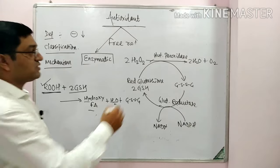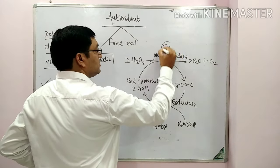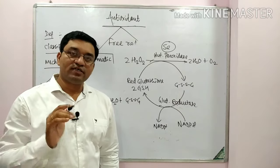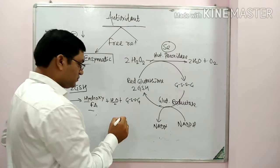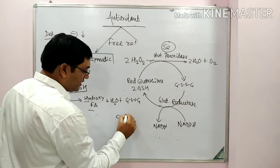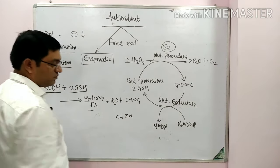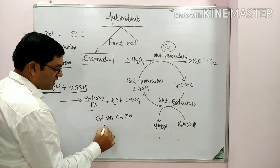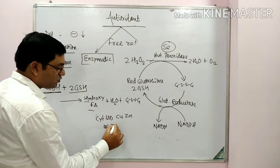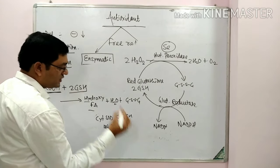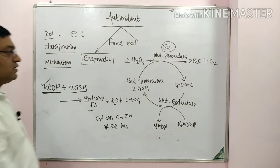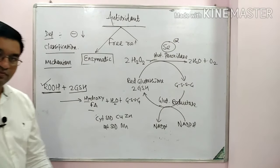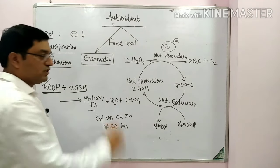Glutathione peroxidase is selenium-dependent — these are important MCQ facts. Cytosolic superoxide dismutase is a copper and zinc containing enzyme; mitochondrial superoxide dismutase is a manganese containing enzyme; and glutathione peroxidase is a selenium containing enzyme. These are the four enzymatic antioxidants.